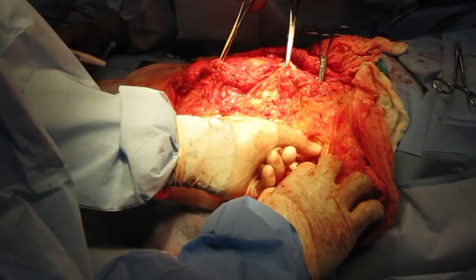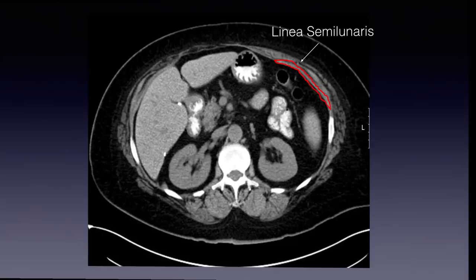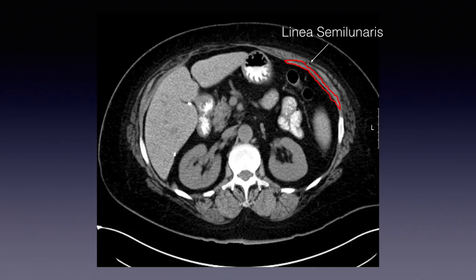Returning to the transversus abdominis muscle and its muscular contributions to the posterior rectus sheath — you can see this relationship on any CT scan. Looking at axial views of the upper third of the abdominal wall, you'll see the lateral border represented by the linea semilunaris, and the muscle fibers, circled in red, actually contributing to the posterior rectus sheath. So the transversus abdominis muscle contributes to the posterior rectus sheath in the upper third of the abdomen.